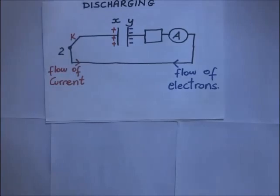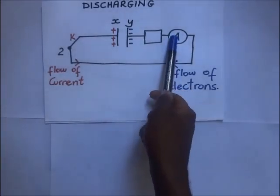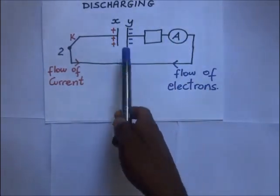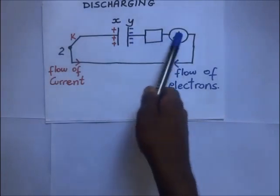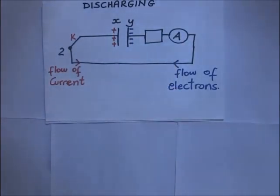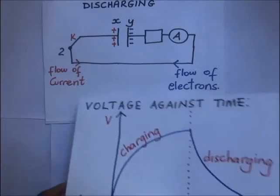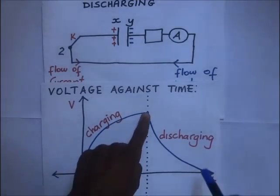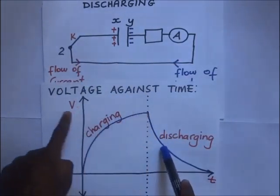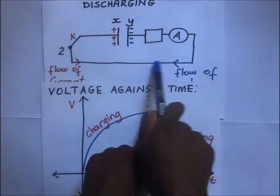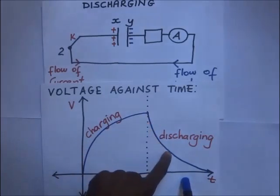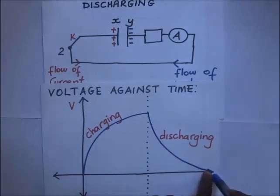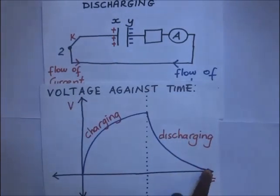The current through the ammeter is initially high as electrons travel to discharge plate X, but as time goes on the current decays to zero, meaning the capacitor is fully discharged. On the voltage against time graph during discharging: the voltage starts very high when switch K is connected to terminal two, then drops as electrons neutralize the positive charges on plate X, decaying to zero when the capacitor is completely discharged.